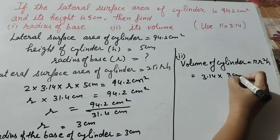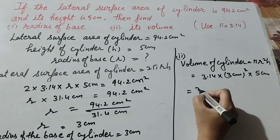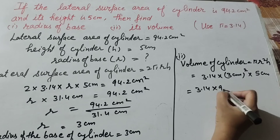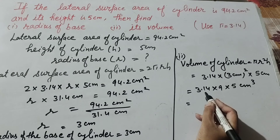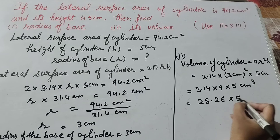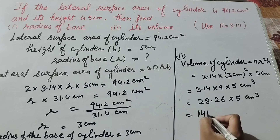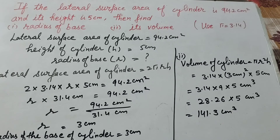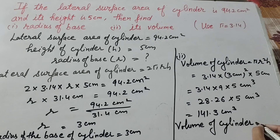Volume = π × r² × h = 3.14 × (3)² × 5 = 3.14 × 9 × 5 = 28.26 × 5 = 141.3 centimeter cube. So the volume of the cylinder = 141.3 centimeter cube.